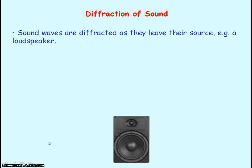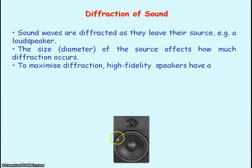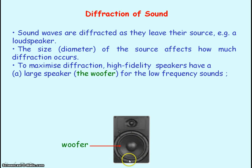The sound waves produced from a loudspeaker are actually diffracted as they leave the loudspeaker. The amount of diffraction depends upon the diameter of the loudspeaker and also the wavelengths of the sound waves produced. High fidelity speakers have a large diameter speaker for the woofer, which maximizes the diffraction for low frequency sound waves — these are sounds of large wavelengths. To maximize diffraction, remember the wavelength has to approximately equal the size of your gap, so low frequency, large wavelength sounds need to be diffracted from a large diameter speaker.